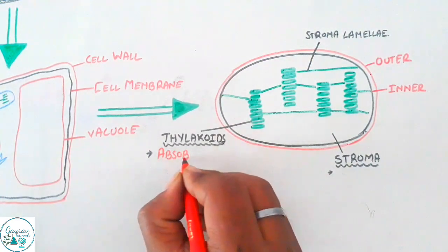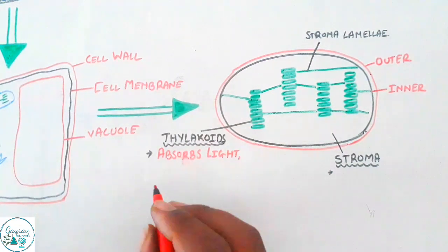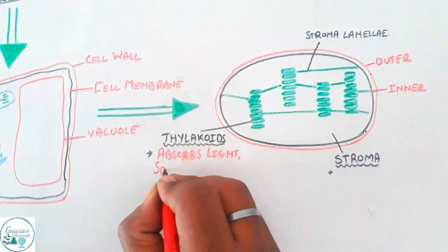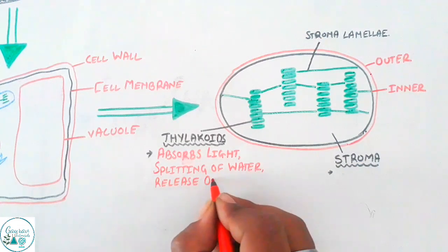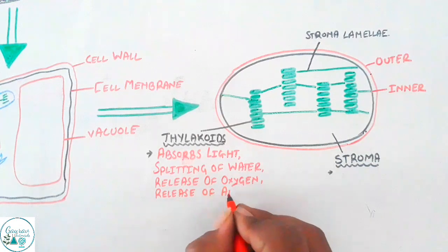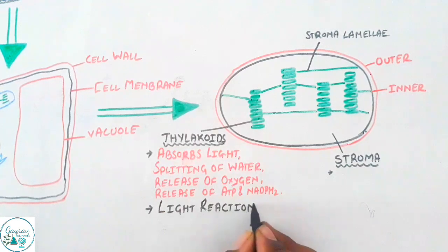Thylakoid is basically the place where the light would be absorbed which would result into the photolysis or the breakdown of water, or you can call it as splitting of water. Now the splitting of water would release oxygen and ultimately drive the synthesis of ATP and NADPH2. Since this process is dependent on light it is also called as light reaction.